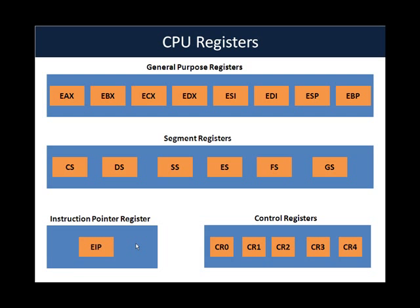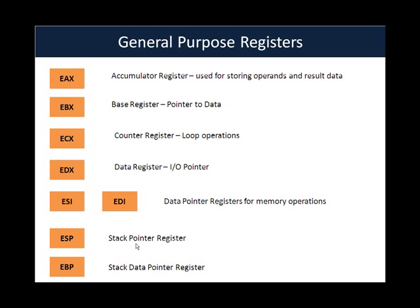Let's look at more details about the general purpose registers. EAX is the accumulator register, generally used for storing operands and results data. EBX, the base register, is generally used for storing pointers to data. ECX, also known as the counter register, is generally used in loop operations and string operations. EDX is the data register, generally also used as an input/output pointer. ESI is the source index and EDI is the destination index — they are data pointer registers used for various memory operations, more generally for string operations.